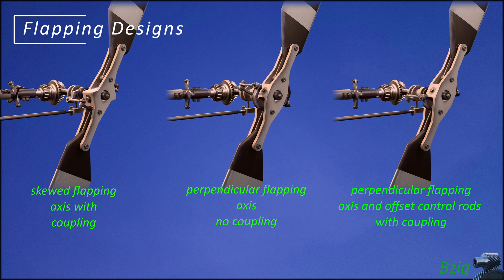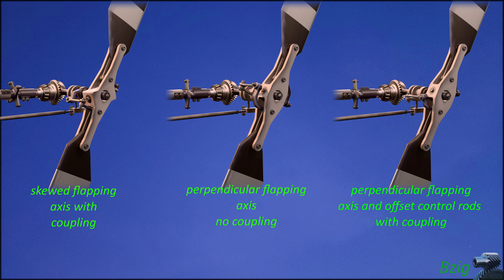To help with visualization and understanding of these mechanical motions, I modeled three separate designs. The design on the left is the actual Robinson design — it has a skewed flapping axis to achieve pitch flap coupling. In the middle is a design where the flapping axis is perpendicular to the blades, with no pitch flap coupling and no delta-3 angle. On the right is a repeat of the center design except that the blade pitch control rods are moved off of the flapping axis, and this new position results in pitch flap coupling. The right side also answers Chris C's question about how rotors with elastomeric bearings can achieve pitch flap coupling.